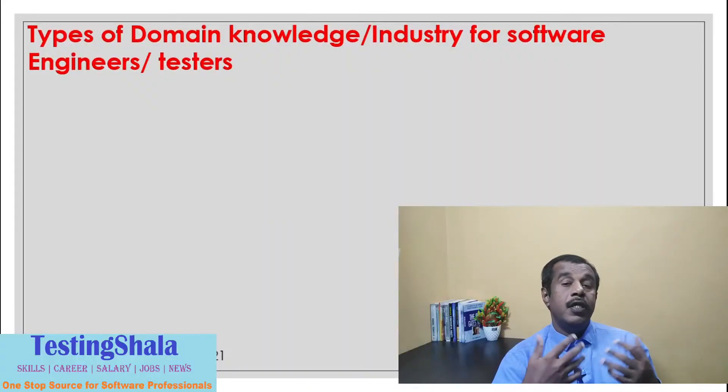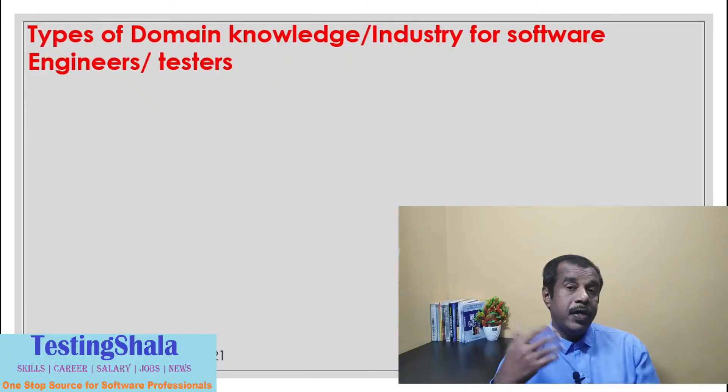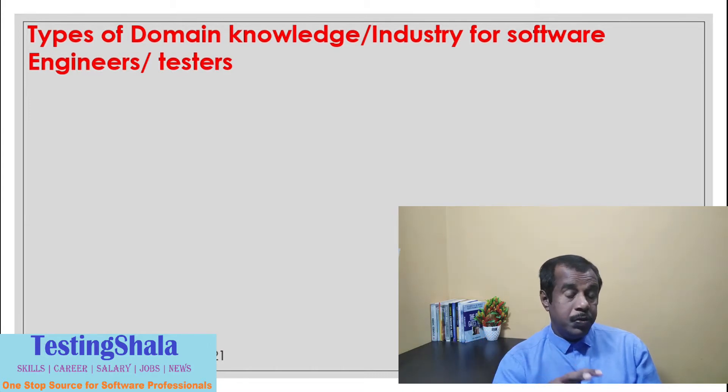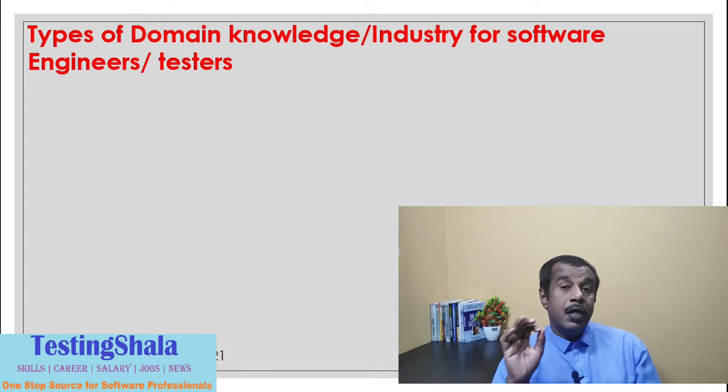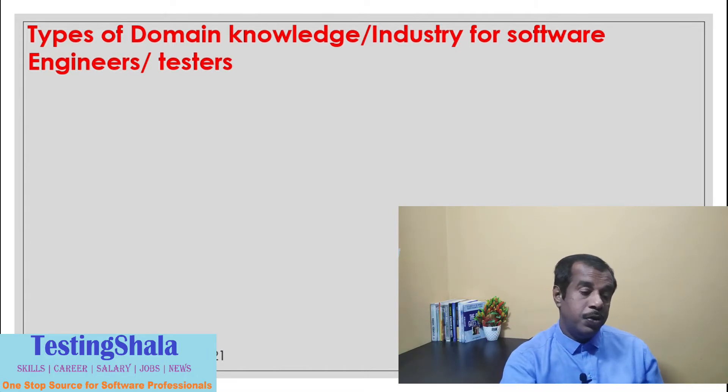In this video we'll look at the different types of domain knowledge available in the industry for software engineers. I have listed almost around 19 different industries where you can get expertise, especially in the field of software development and software testing, which has been spread across various industry verticals.